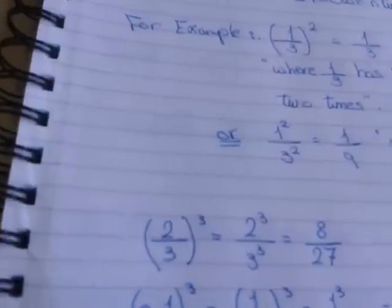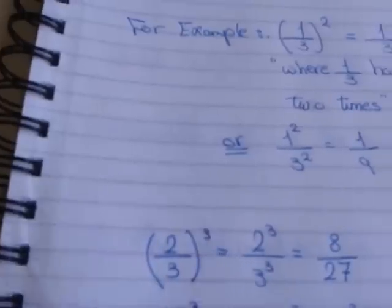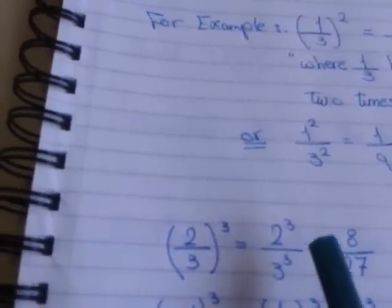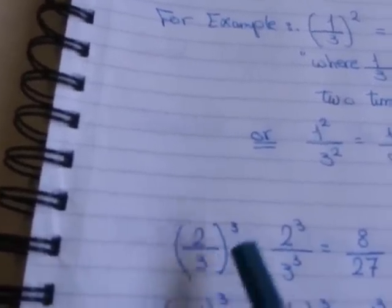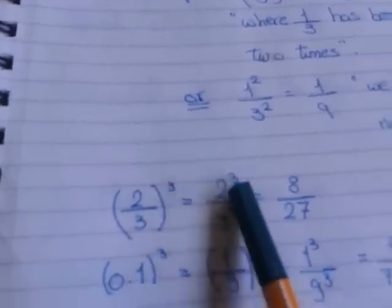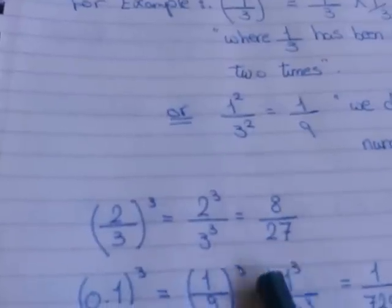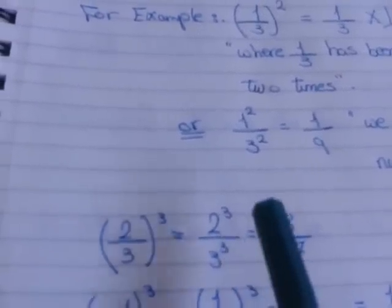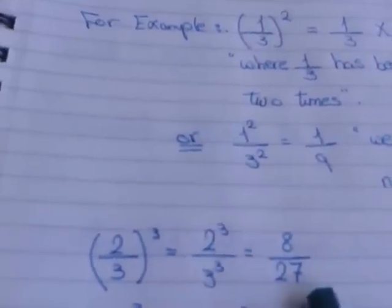Let's see another example. 2 over 3, all to the power 3. We distribute 3 to 2 and to 3: 2 power 3 over 3 power 3. 2 power 3 gives me 8, and 3 power 3 gives me 27. Put 2 power 3 on the calculator — it will give me 8.